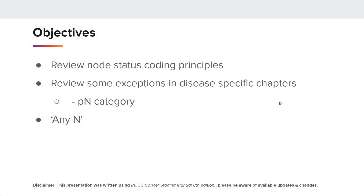Our objectives this morning are to review the Node Status Coding Principles, to review some exceptions in disease-specific chapters for P, N category, and any X. Please note that this presentation was written using the AJCC Cancer Staging Manual, 8th edition. Please be aware of available updates and changes.